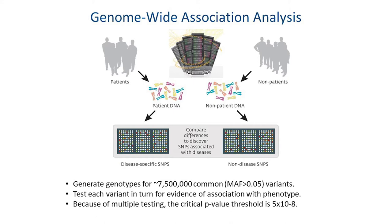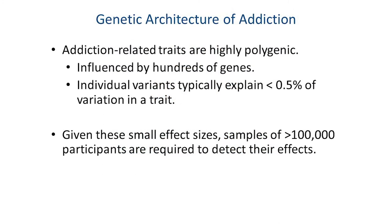Because of this, to claim anything is significant we have to apply a huge correction for multiple testing. There are about a million independent tests given that nearby markers are correlated, so we require a p-value of five times ten to the minus eight for genome-wide significance — a very, very small number, and by itself that is problematic.